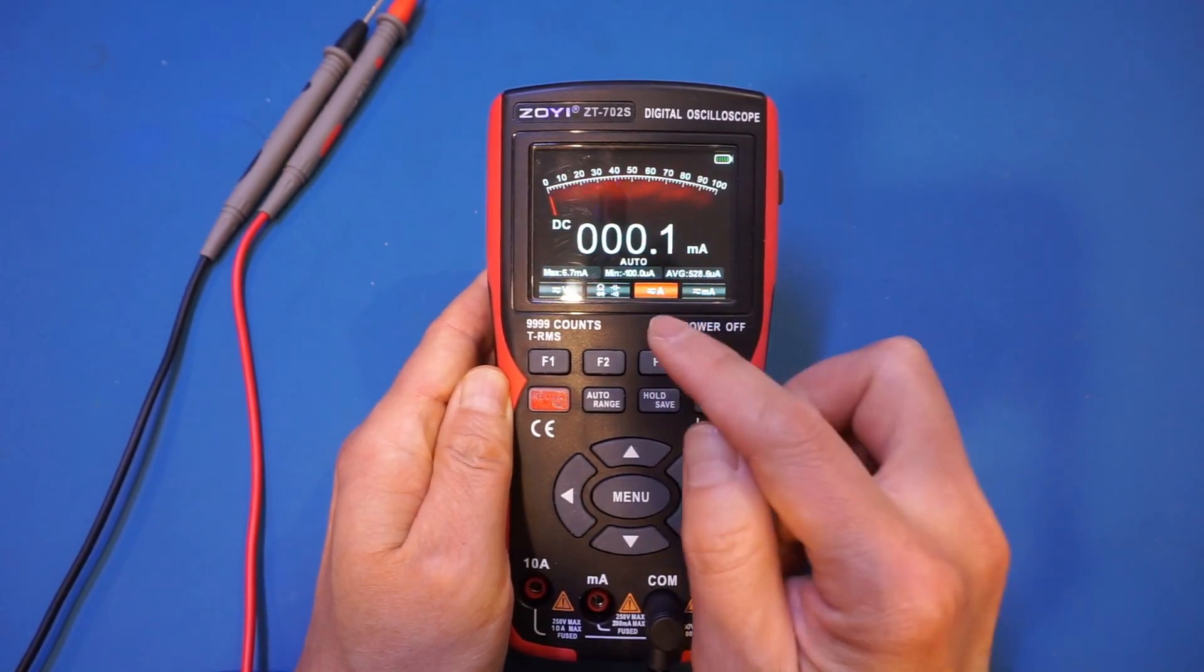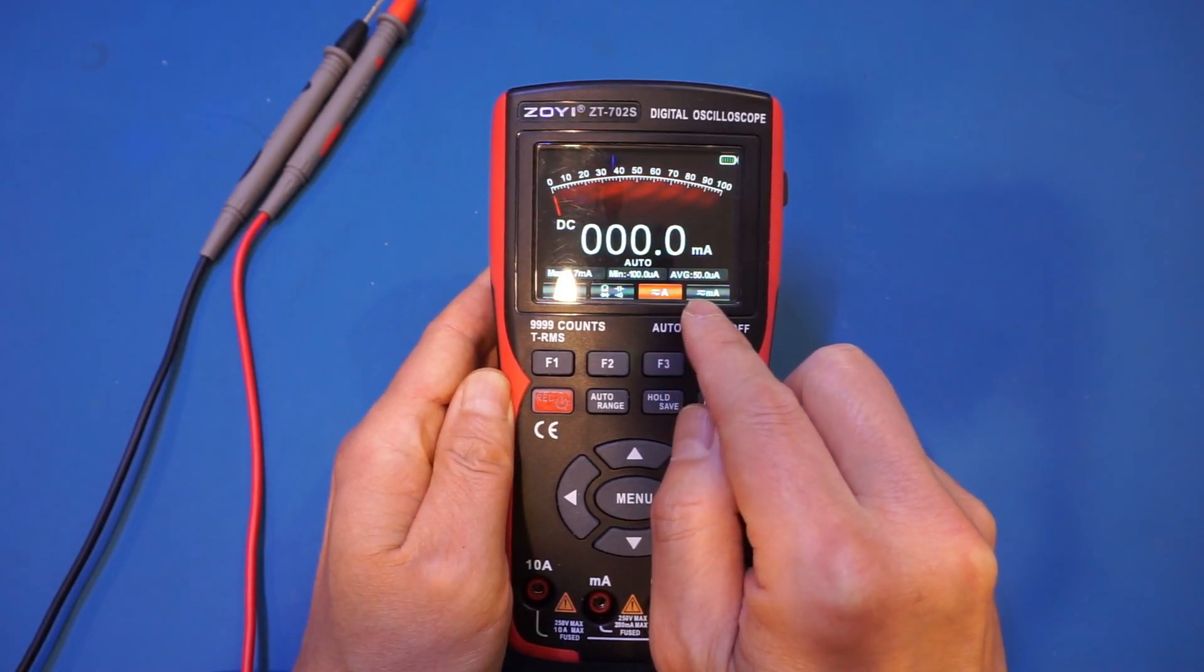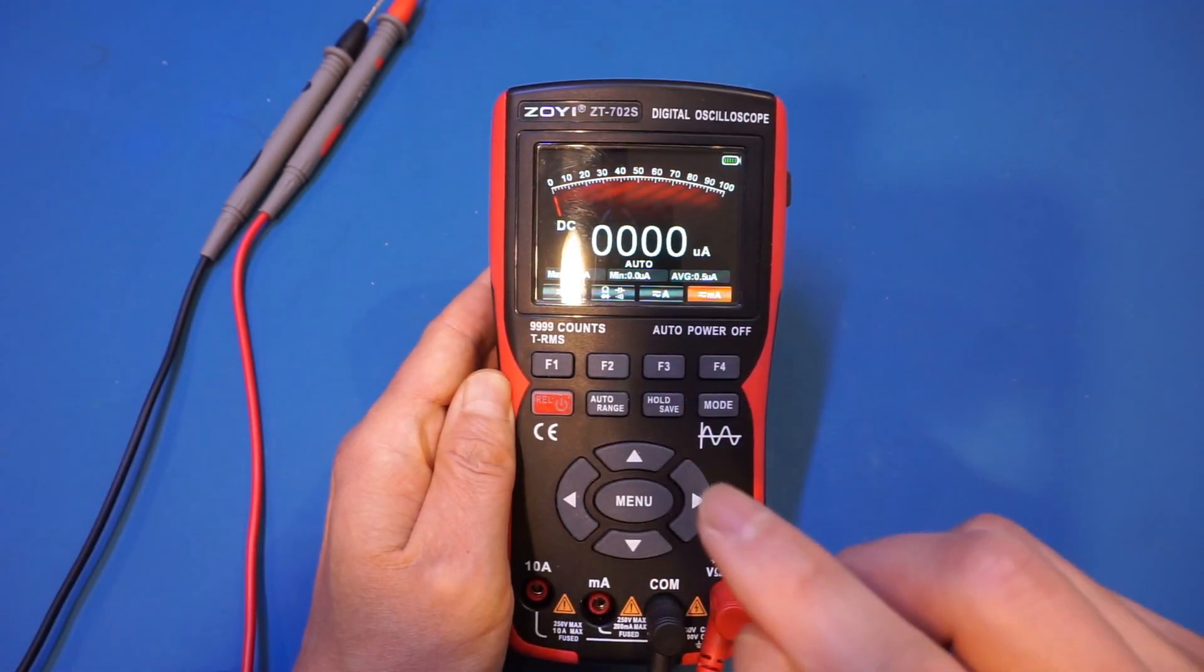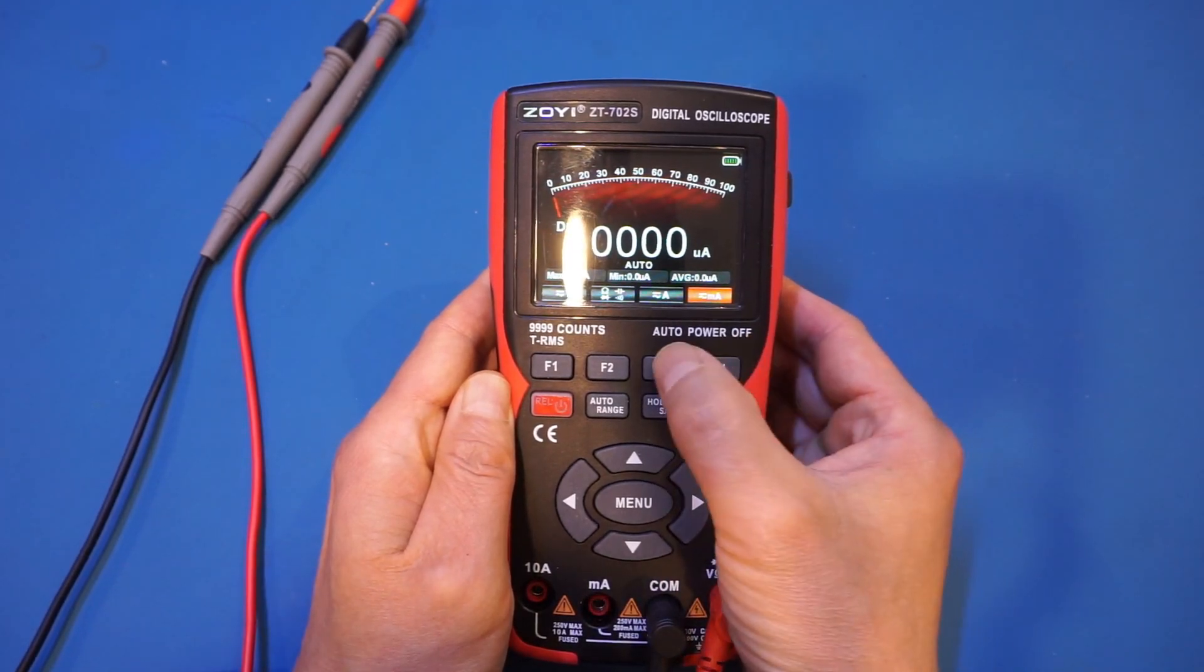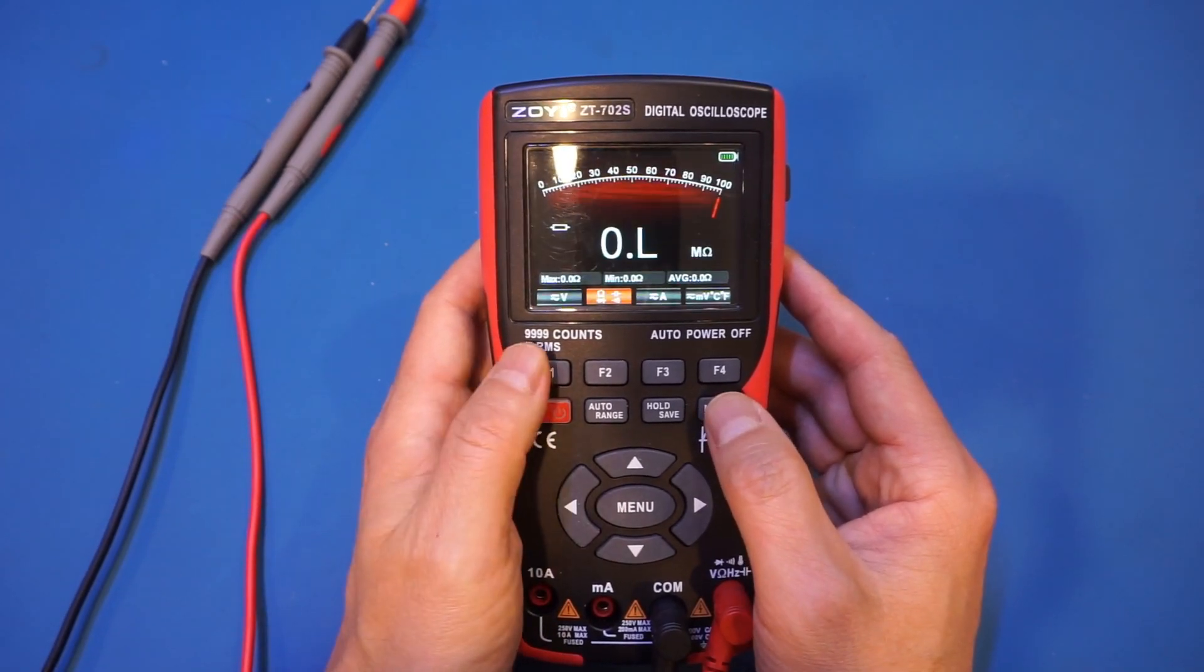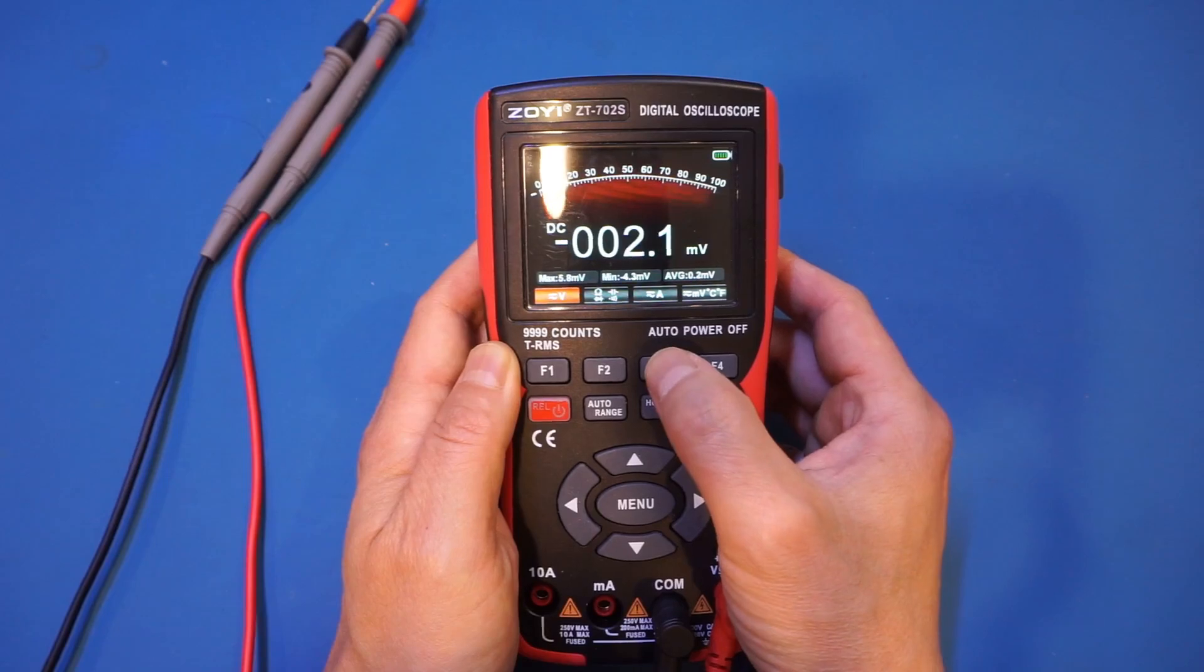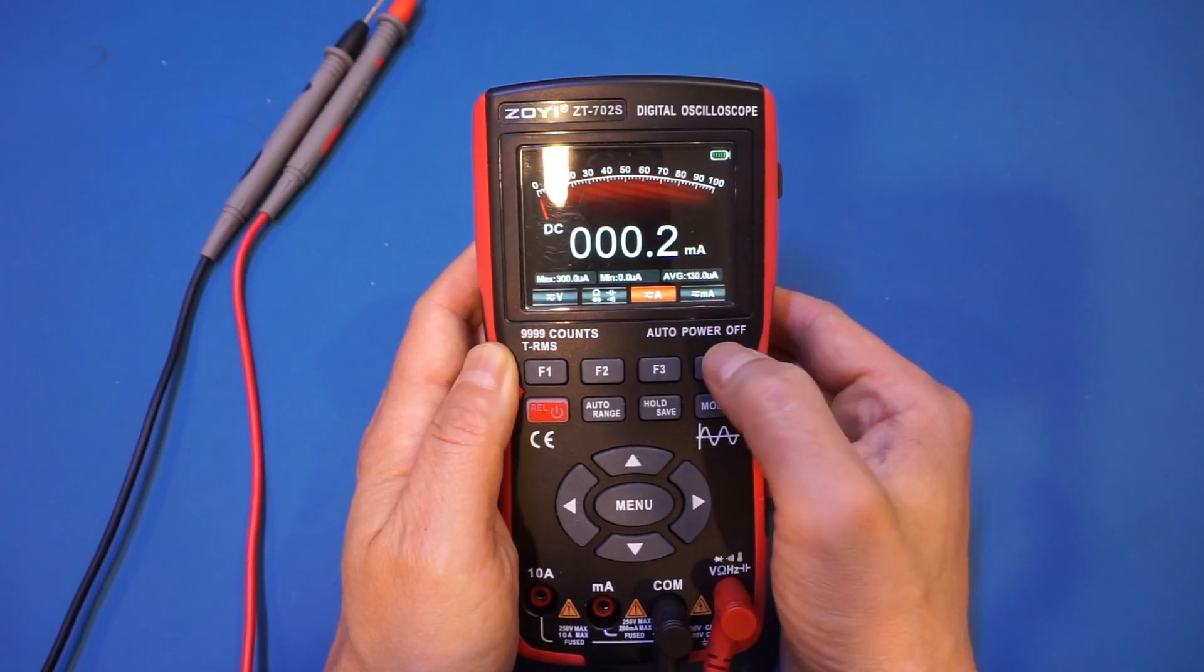Actually, you notice that by default it switches to the amp range. And if you wanted the milliamp range, you have to press this range switch button again after you have already switched into the current mode, as the milliamp option was not available before we got into the current mode. When we first switch to the multimeter mode, it depends on where the range is. If you are not on the current range, the only available range is for amp measurement. Once you press that amp measurement, you can get to milliamp measurement.